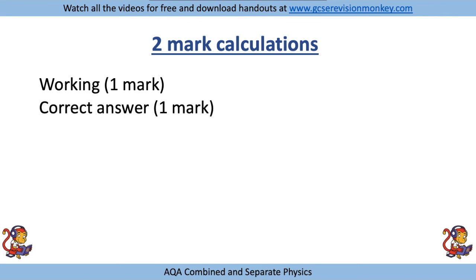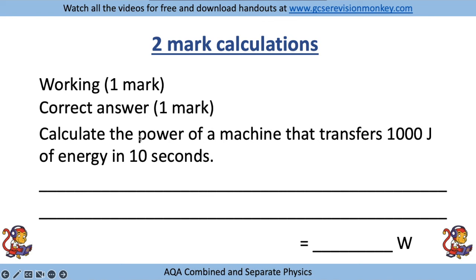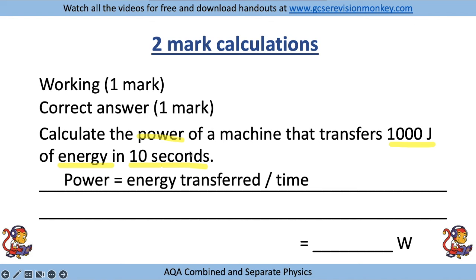Let's have a look at this question: calculate the power of a machine that transfers 1000 joules of energy in 10 seconds. You can use a highlighter in the exam to highlight the key information. You're looking for the equation with power, energy, and time. Write down the equation: power equals energy transferred over time.